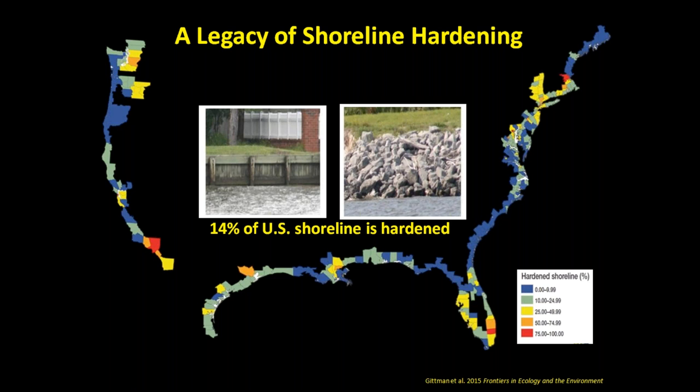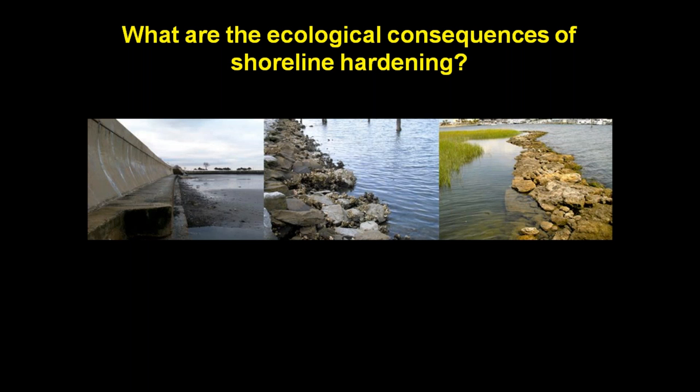In 2015, Rachel Gitman, then a postdoc at University of North Carolina, and her colleagues released results of a meta-analysis examining regional reports with shoreline hardening data from different areas around the United States. They concluded that 14 percent of the total shoreline is hardened, and if development continues at this pace, it may be more than 30 percent armored by the end of the century. This map shows areas in red that currently include more than 75 percent hardening, such as portions of Southern California.